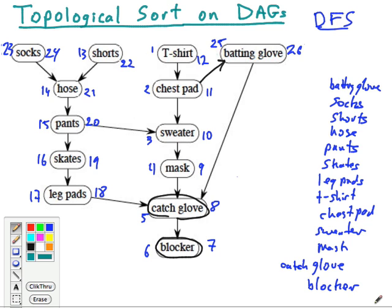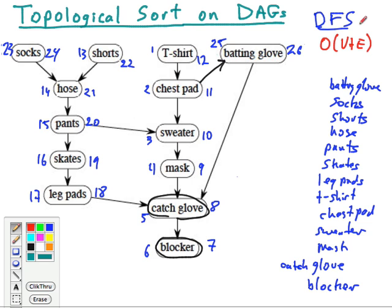A quick note on time analysis: we've already done the analysis of depth-first search. All we've added here is pushing something onto the front of a linked list, which is O(1). So we're still O(V + E), which is the analysis we did for depth-first search.